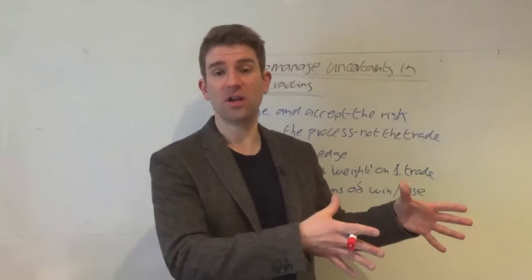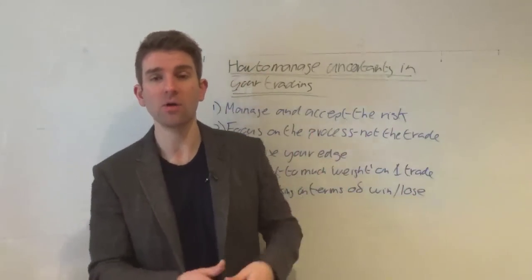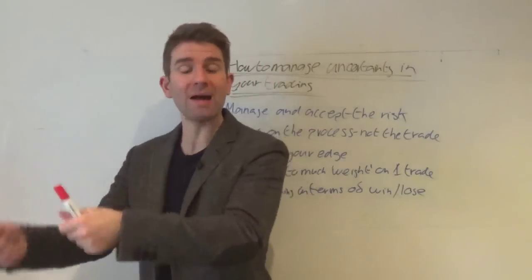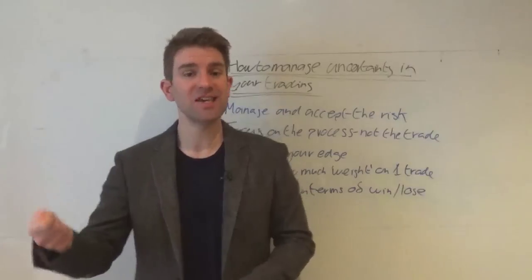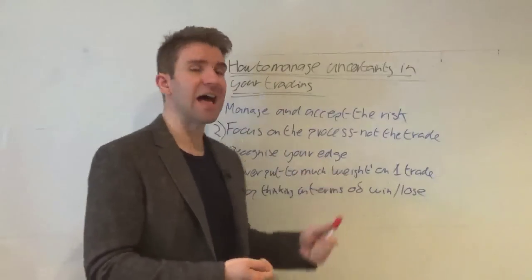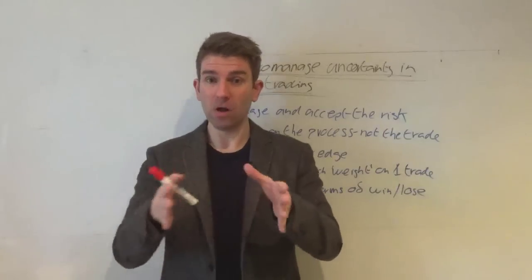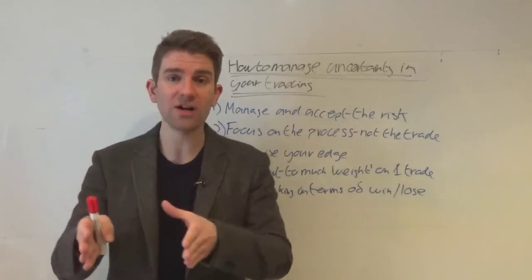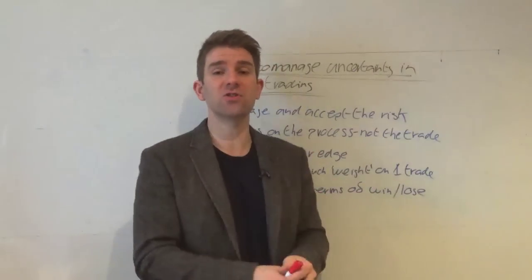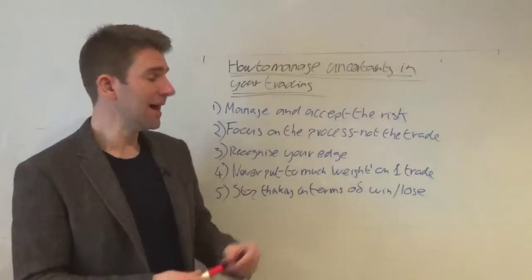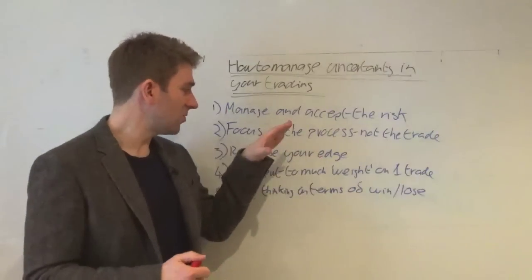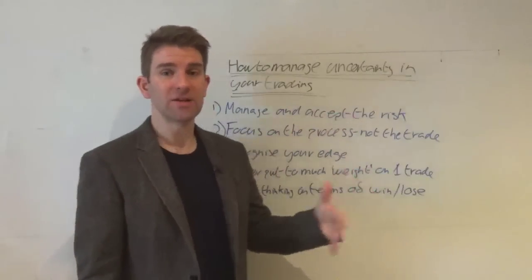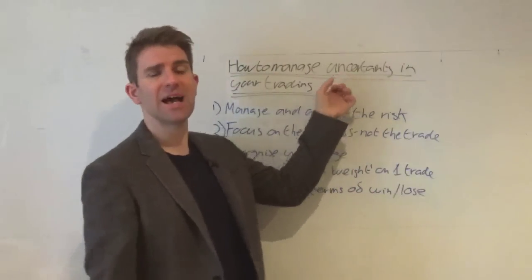If you struggle with the uncertainty of trading, think of it like this. Think of yourself as the owner of a casino. You've got a roulette table, a blackjack table, baccarat, video poker, slots, whatever. You know that each one of those has a statistical edge for you. Roulette's the simplest one to understand. Red and black, and we've got that zero in the middle that gives you your statistical edge. You know that the uncertainty of whether you're going to make money on the next spin, you do not know whether the customer's going to win or lose.